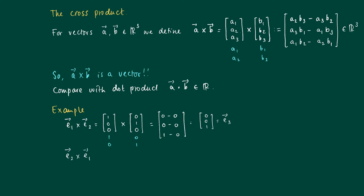So another example, E2 cross E1. So this is (0, 1, 0) times (1, 0, 0).